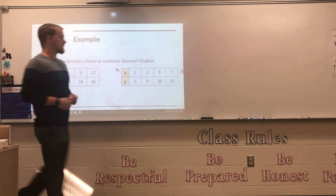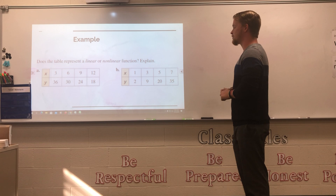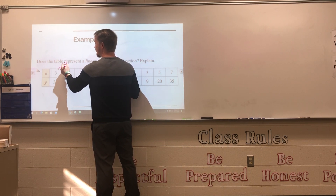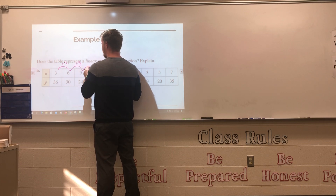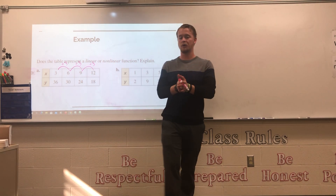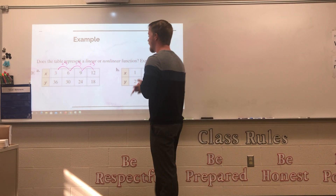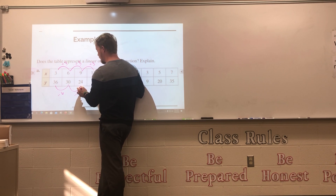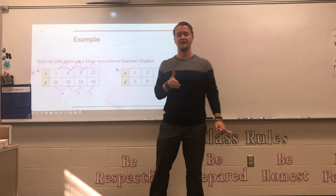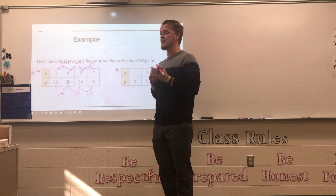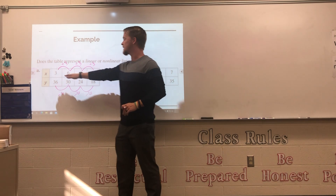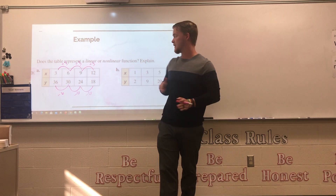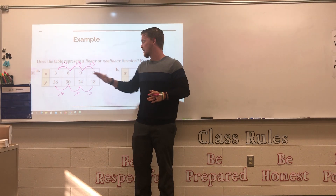Does the table represent a linear or nonlinear function? Looking at the x-values: from 3 to 6 is adding 3, from 6 to 9 is adding 3, from 9 to 12 is also adding 3 — good so far. Then the y-values: from 36 to 30 is subtracting 6, from 30 to 24 is subtracting 6, from 24 to 18 is also subtracting 6. The x's have a constant pattern of plus 3, the y's have a constant pattern of minus 6, so this is a linear function with a constant rate of change.